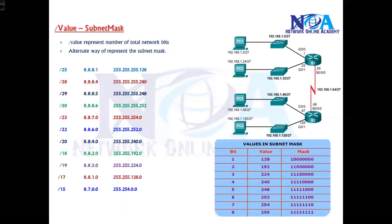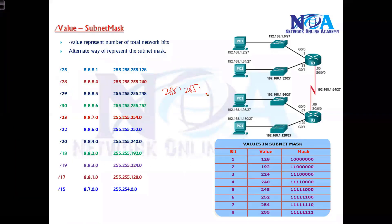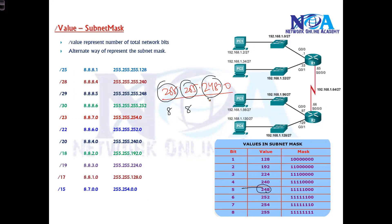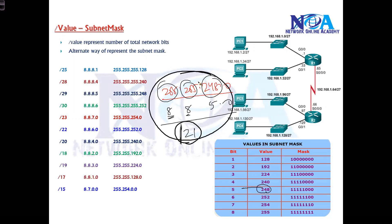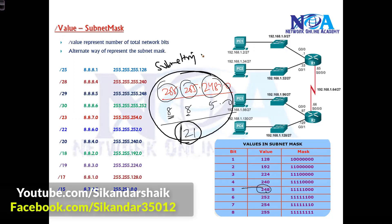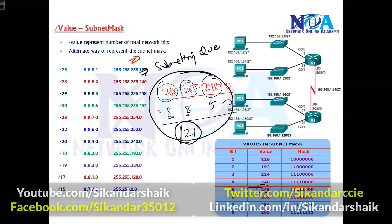This is what slash notation or slash value is — an alternate way to write your subnet mask. Some devices use slash value format, others use the full subnet mask format, so you should know both conversions. For example, if you see 255.255.248.0: 255 = 8 bits, 255 = 8 bits, 248 = 5 bits, total = 21, so this is slash 21. This is very useful when solving subnetting questions or identifying which subnet an address belongs to and how many host bits it has.